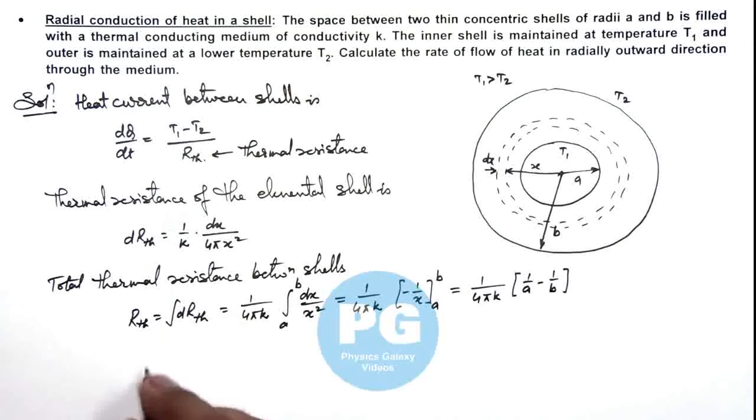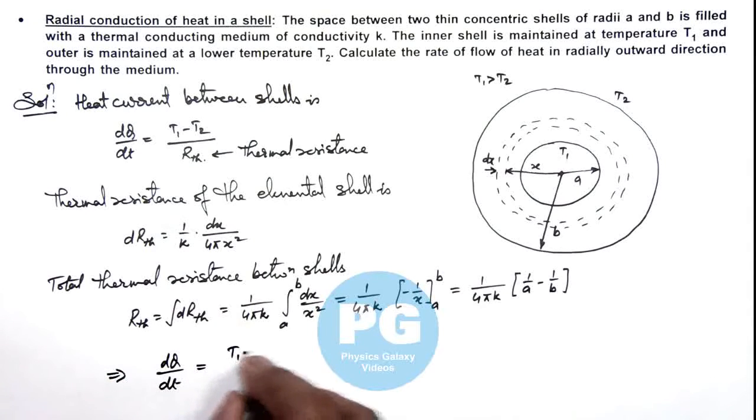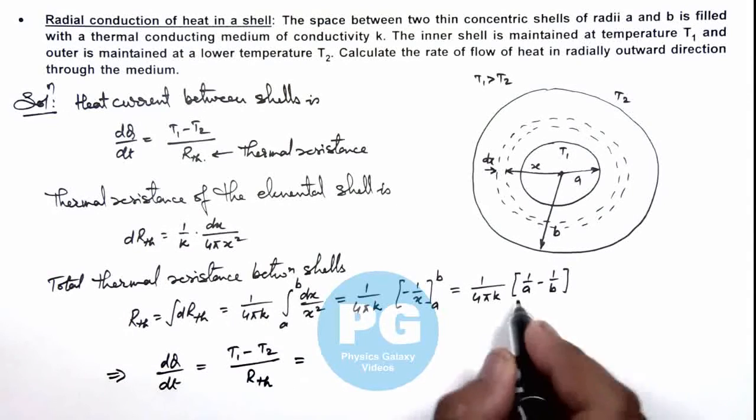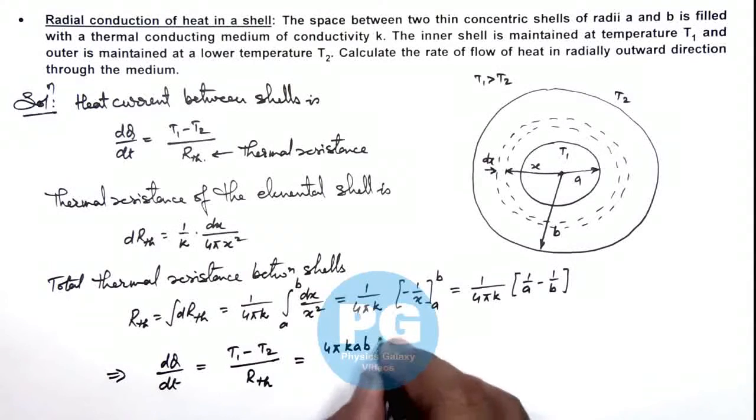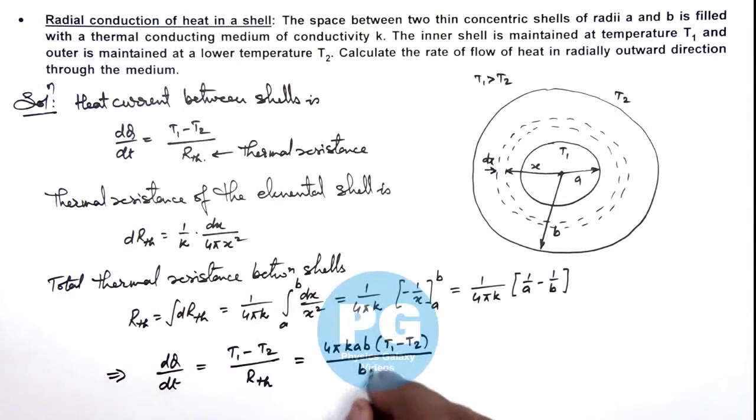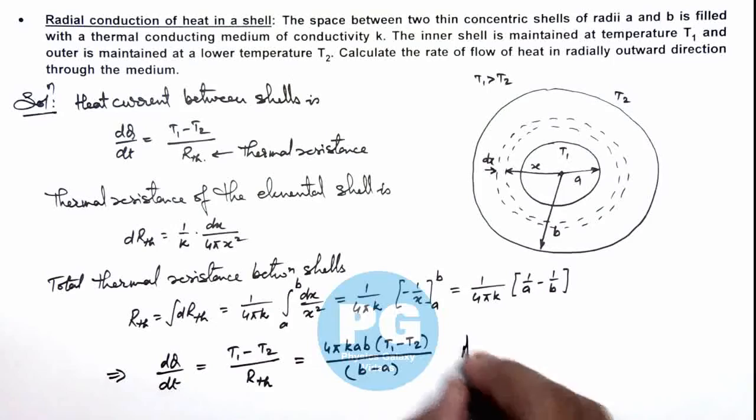So from here we can write dQ/dt is equal to (T₁ - T₂) divided by the thermal resistance. If we substitute this value over here, this gives us 4πkab(T₁ - T₂)/(b - a). That is the result of this problem.